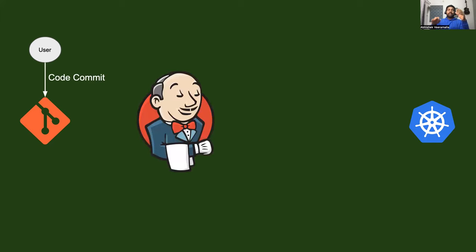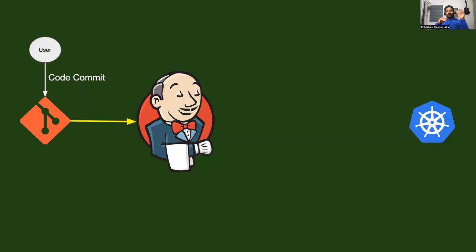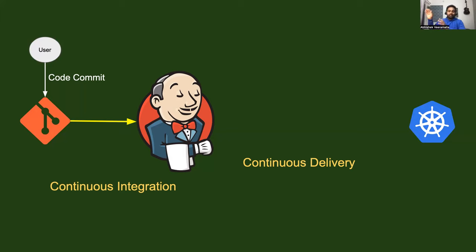Then we use an orchestrator — continuous integration and continuous delivery orchestrators like Jenkins. The reason for using orchestrators is that whenever there is a code commit to the Git repository, a Git webhook triggers the pipeline in your orchestrator. In this case, there is a Git webhook that triggers the Jenkins pipeline. Jenkins handles the continuous integration part, and then there is the continuous delivery part, which we will cover later.